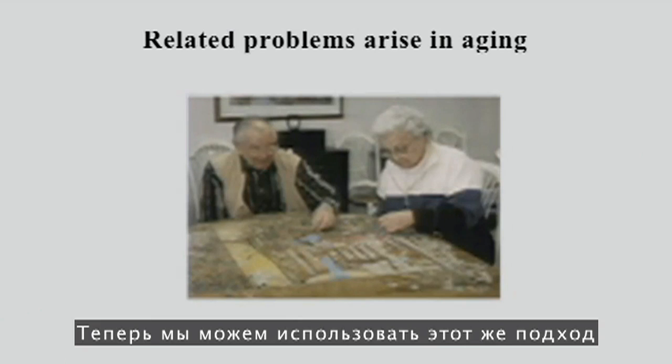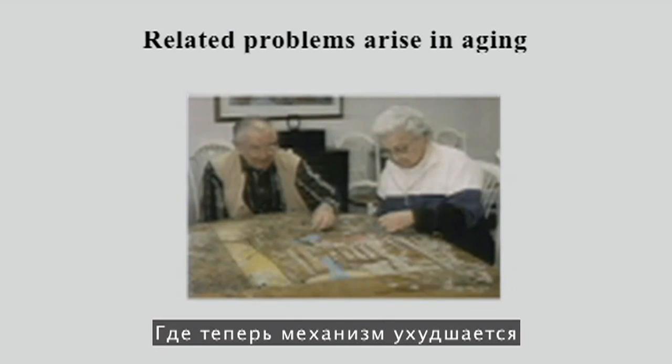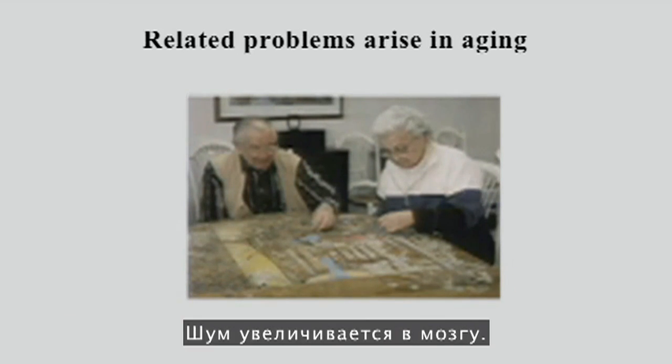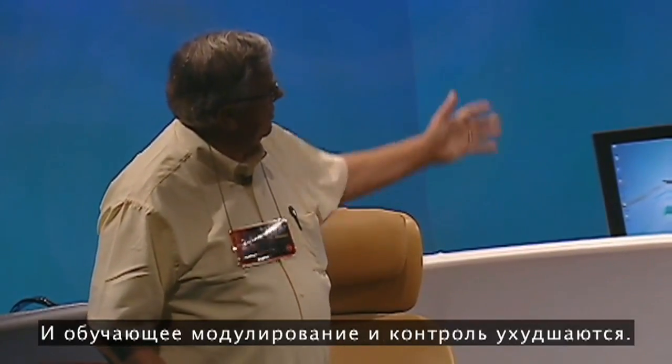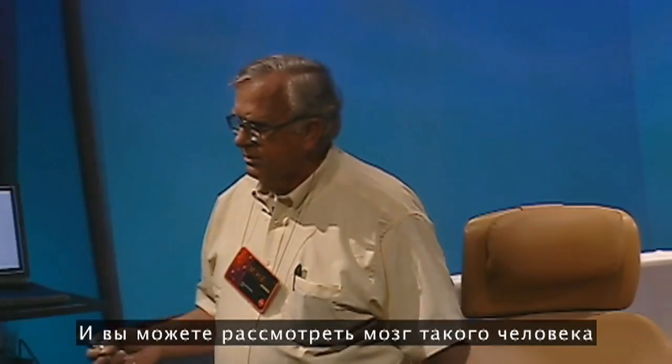You can also take the same approach to address problems in aging, where again the machinery is deteriorating. From competent machinery, it's going south — noise is increasing in the brain, and learning modulation and control is deteriorating. You can look at the brain of such an individual and witness a change in the time constants and space constants with which the brain is representing language. Just as the brain came out of chaos at the beginning, it's going back into chaos in the end.